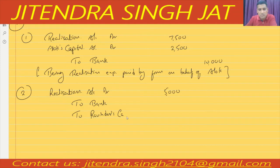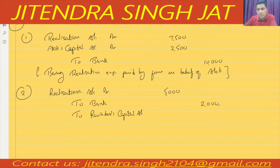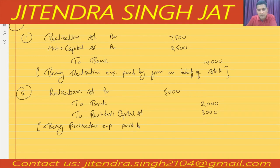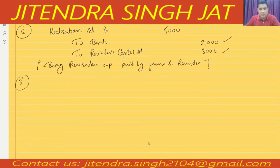Credit to Ravinder's Capital Account — Ravinder is paying the balance of ₹3,000, since the firm pays ₹2,000 and the balance is paid by Ravinder. So whatever the firm paid, ₹2,000 is credited to Bank; whatever the partner paid is credited to Ravinder's Capital Account. Being realization expenses paid by firm and Ravinder. I hope the entry is clear.